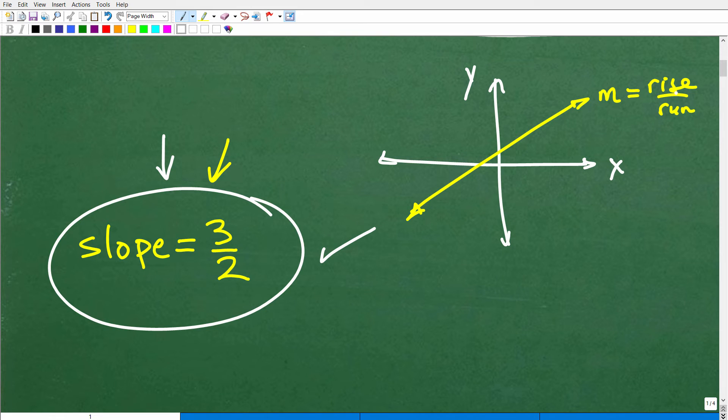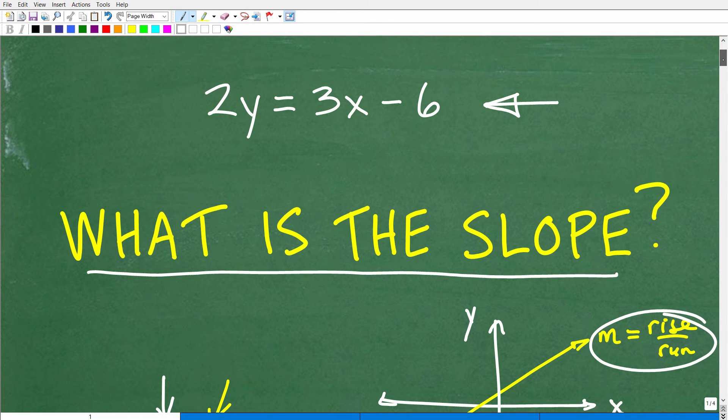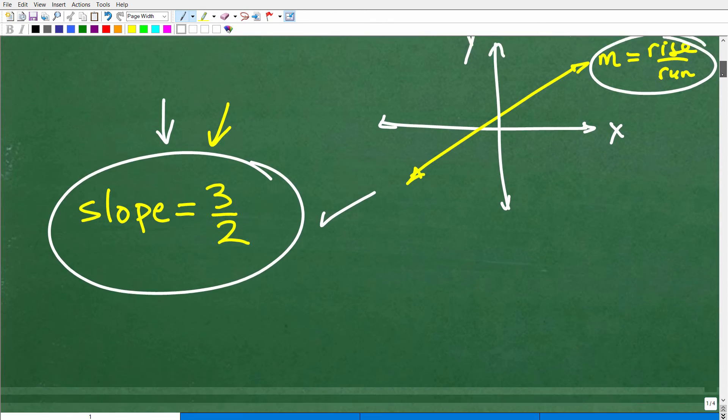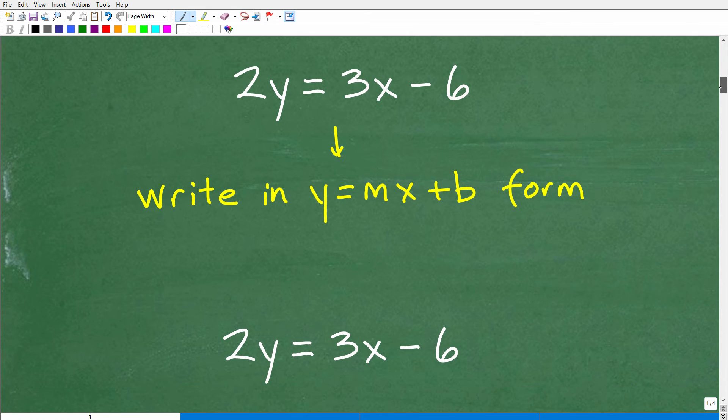Okay, but anyways, this is basically what we're looking for. We're looking for the slope of this particular line right here. Here, 2y is equal to 3x minus 6. Okay, all right. So how can we find the slope easily?